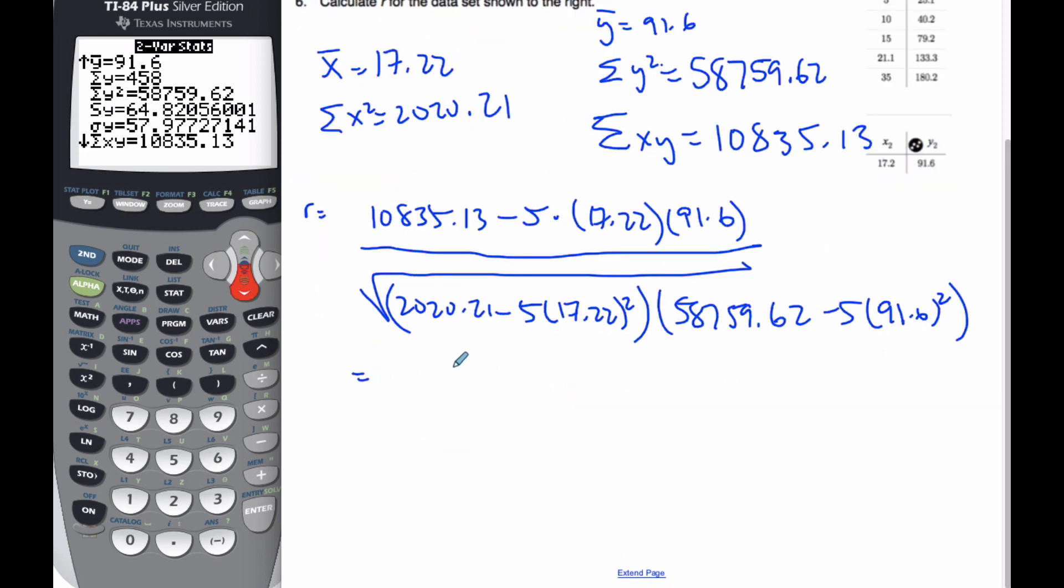it ends up being 2948.37 over 3005.795, which is, to many more significant figures, r is equal to 0.98089.